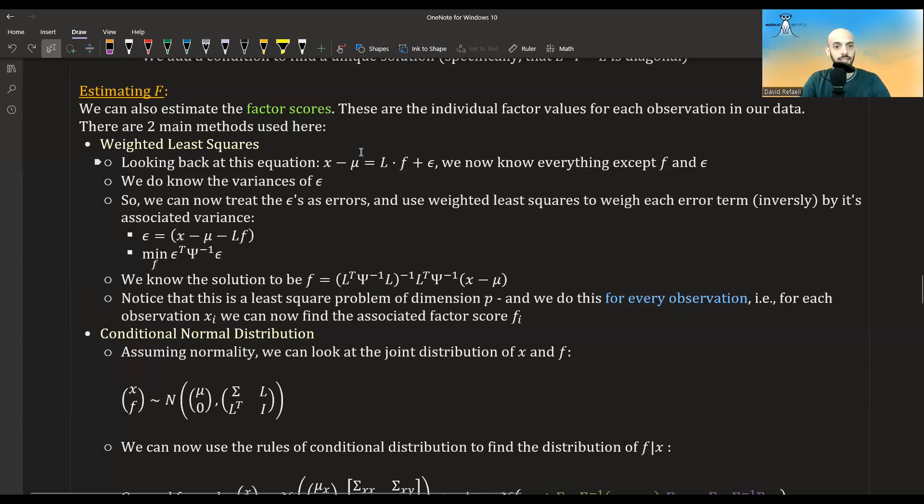And so anyway, yeah, this is our error term. It's basically the x minus mu, which is the y in usual regression, minus L times F, which is the x times the beta in regular regression. Now we want to minimize this. The solution is we already know what it is. If not, go check out this other video I mentioned. The solution will be this.